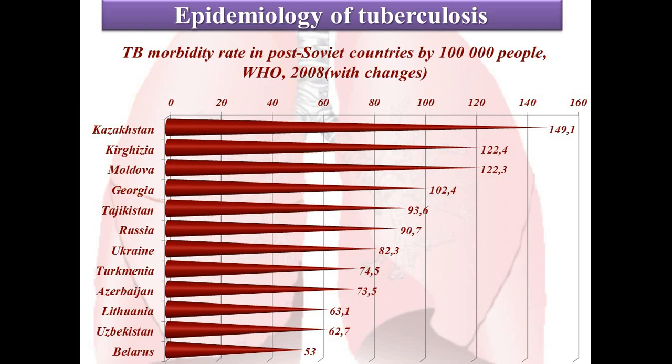You can see in this diagram one of the main indicators of the epidemiology situation — it is morbidity. There are four indicators of epidemiological situation: morbidity, mortality, infection, and morbidness. One of the main indicators is morbidity.